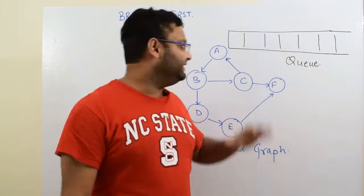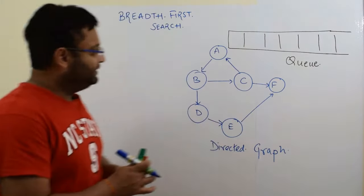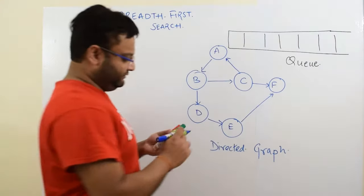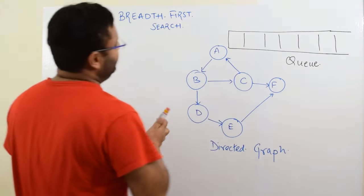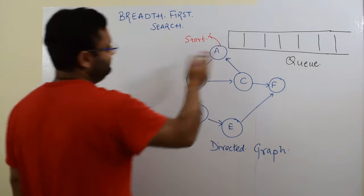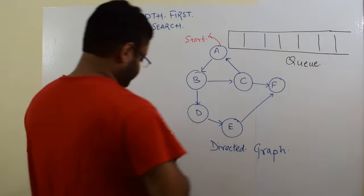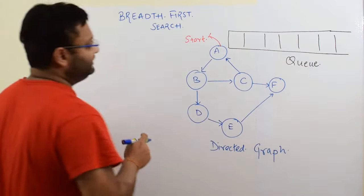We have defined here in this algorithm the definition of neighbor. So let us run. Let us assume that A is our starting node and let us run BFS on this graph starting from A.